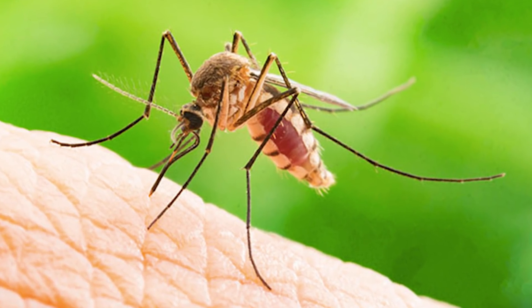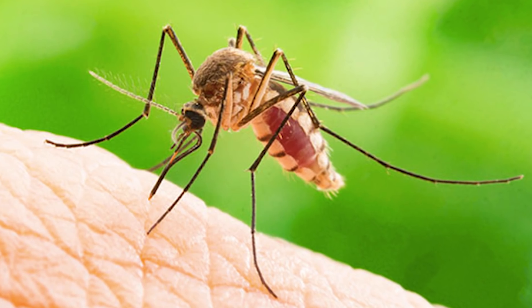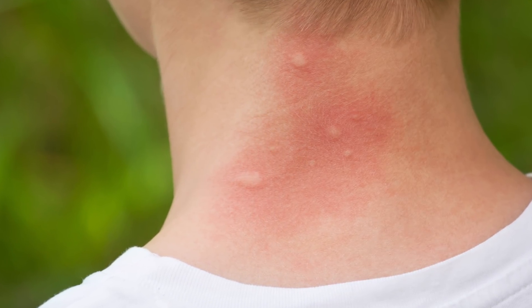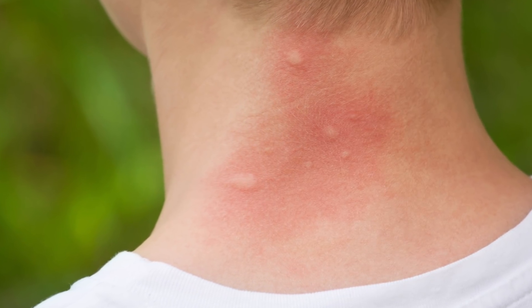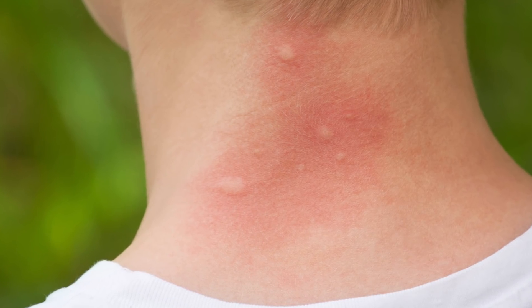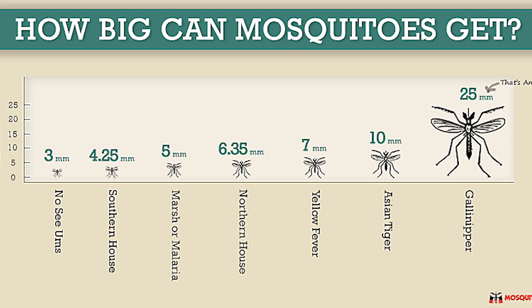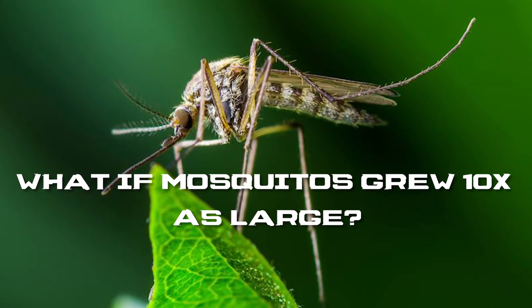Today's video is going to be about mosquitoes — the little bloodsuckers that leave red, itchy bumps, are the number one killer in the world when it comes to animals, and spread countless disease. I know you guys are going to say they're not animals, they're insects — we're talking generalization here. They normally come in sizes ranging from 6 to 12 millimeters, which as we know is very small.